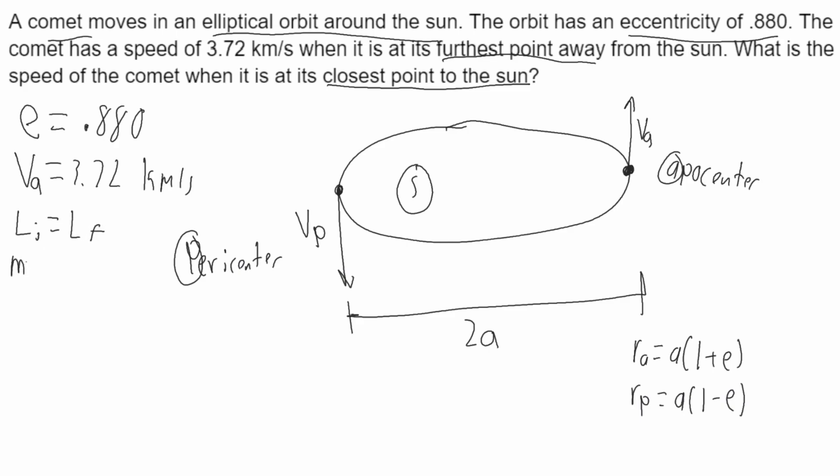Angular momentum is equal to MVR, where this will be before. And I'll just say that before is when the comet is at the apocenter. So it'll be M times V_A, R_A is equal to the final angular momentum, which I'll say is at the pericenter, which will be M V_P R_P.